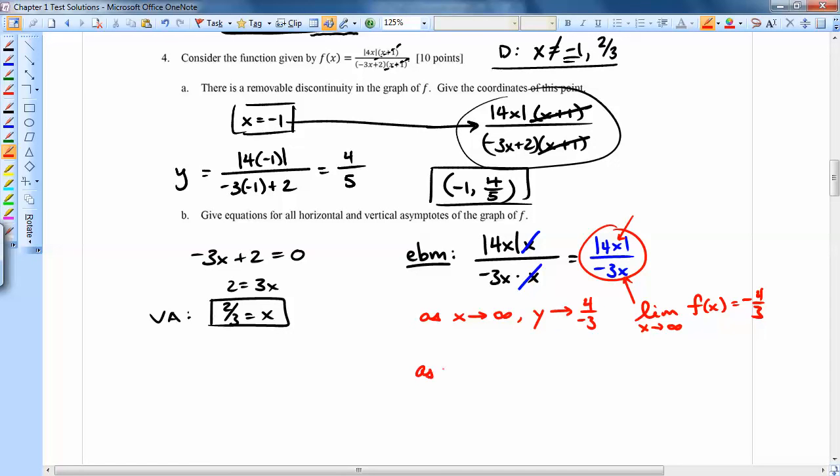But what happens when I plug in x going to negative infinity? The number's really negative. So if I plug that in, the top is still going to be positive, because it's inside absolute values. But the bottom is going to be a negative 3 times a really negative number, which now makes this positive too.